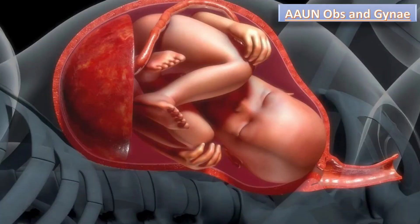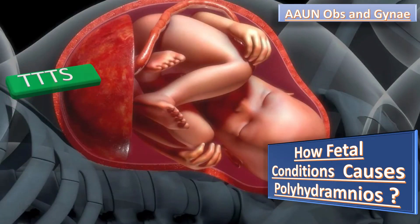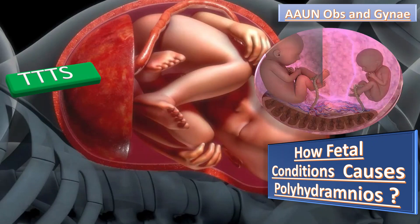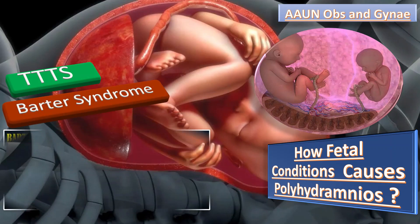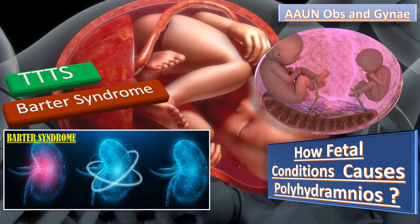How do fetal conditions cause polyhydramnios? First, twin-to-twin transfusion syndrome (TTTS): twin-to-twin transfusion syndrome results in increased amniotic fluid in the recipient twin and decreased amniotic fluid in the donor twin due to abnormal communications between the placentas of both twins. Second is Bartter syndrome, a rare autosomal recessive renal tubular disorder. The defective chloride transport in the loop of Henle leads to fetal polyuria, resulting in severe hydramnios and premature delivery.